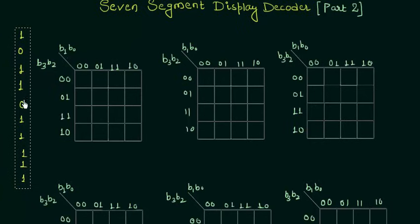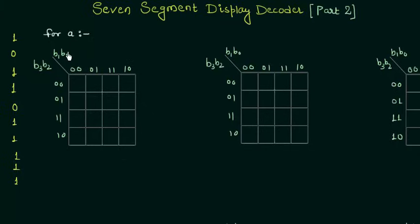This is the value for A. Let me write it down. This K-map is for A. Now we will fill the map for A.